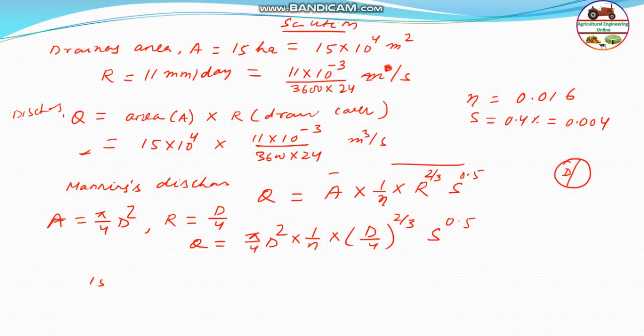Q is already calculated previously, that is 15 into 10 to the power 4 into 11 into 10 to the power minus 3 divided by 3600 into 24. That will be equal to pi by 4 d square into 1 by n that is 0.016, then r is d by 4 to the power 2 by 3, and S is 0.004 to the power 0.5. If we simplify this equation...